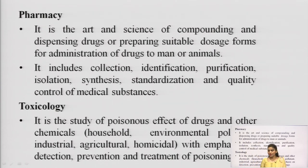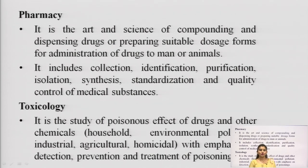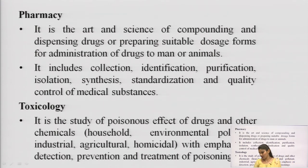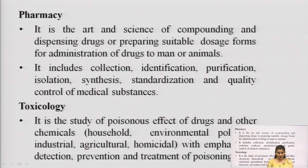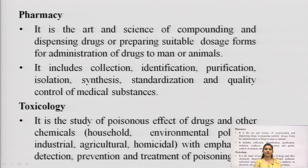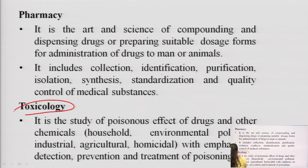Next is pharmacy — it is the art and science of compounding and dispensing drugs, or preparing suitable dosage forms for administration of drugs to men or animals. This includes drug collection, identification, purification, synthesis, standardization, control, and formulation — all these come under pharmacy. Next branch is toxicology — we study the toxic effects of any drug. If the therapeutic dose of a drug is 500 mg, above that dose it will give toxic effects. When we study these toxic effects, that branch is known as toxicology.